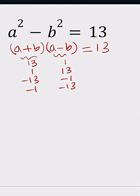To find the a and b values from here, all you have to do is add these two numbers and divide by 2 — that's going to give you a. Because if you think about it, when you add a plus b and a minus b, you'll get 2a.